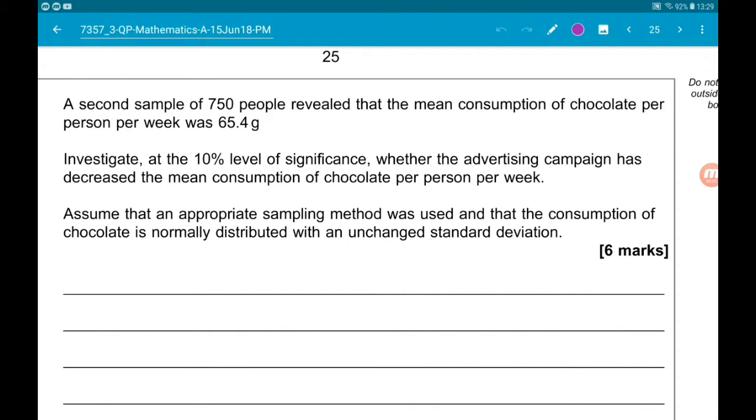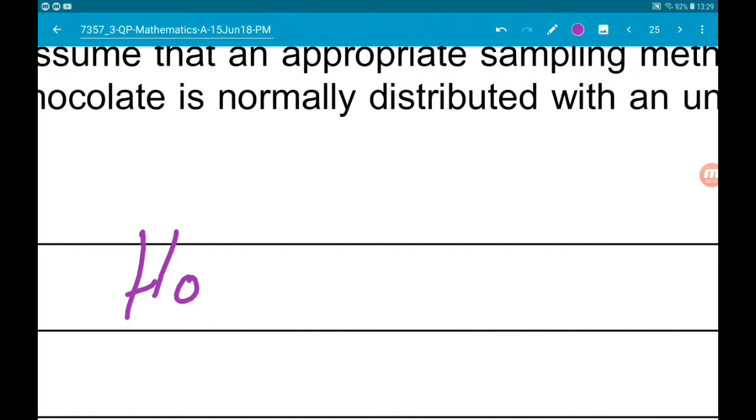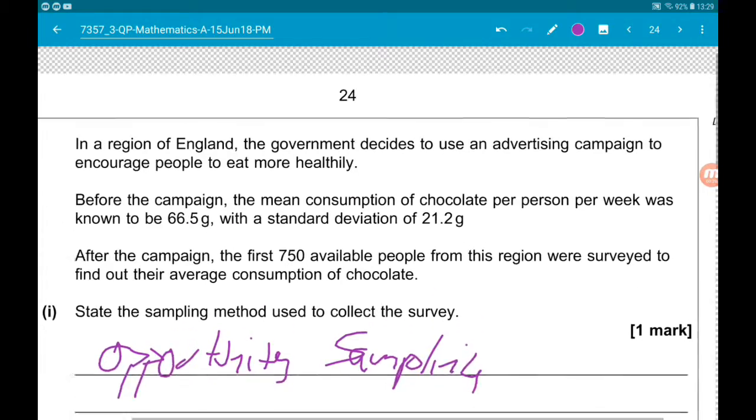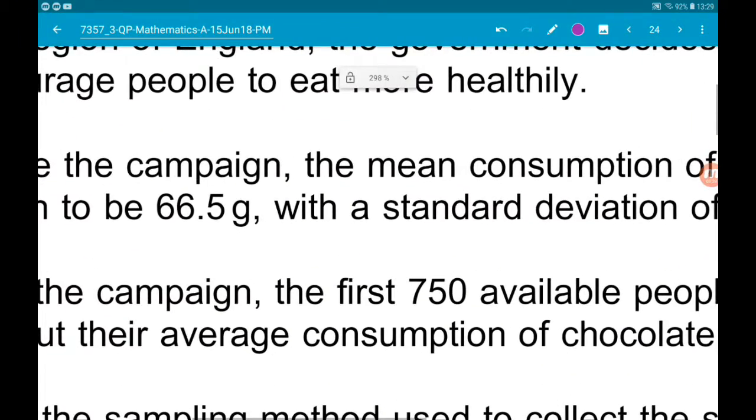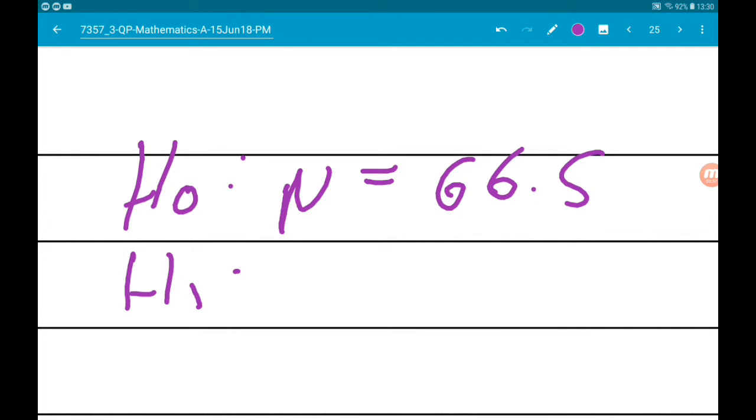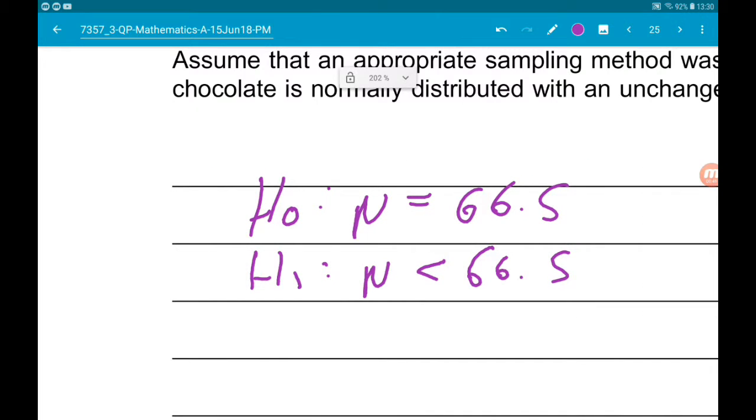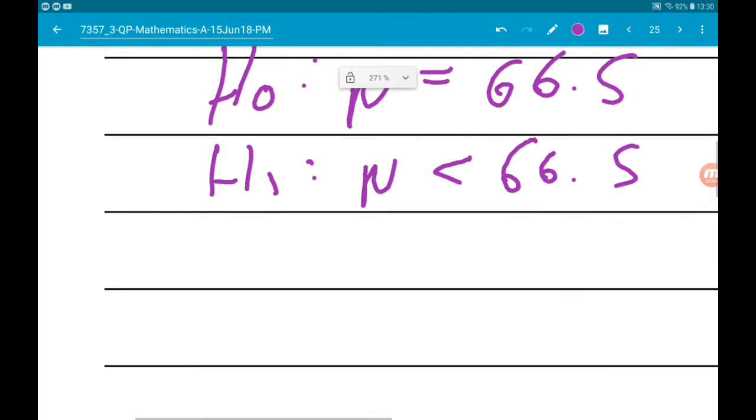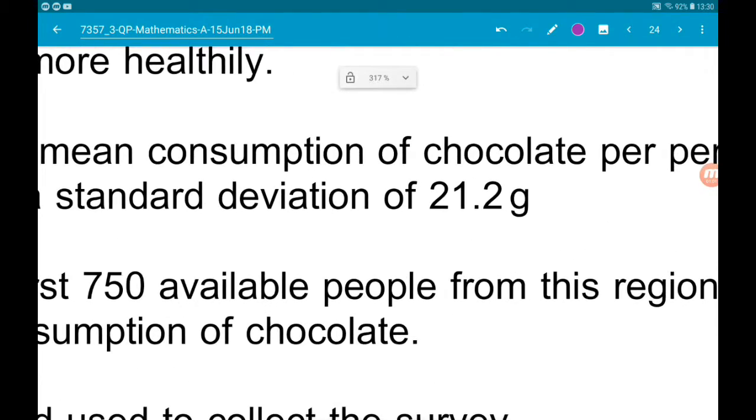So this is a one-tail test because we want to know if the mean has decreased. So H-naught is that mu has not changed, so it's still 66.5. Our alternative is that mu has decreased, so it's less than 66.5. Now we know that sigma is still 21.2.